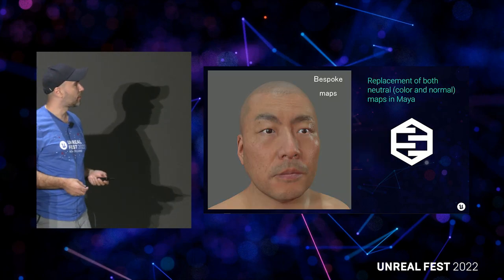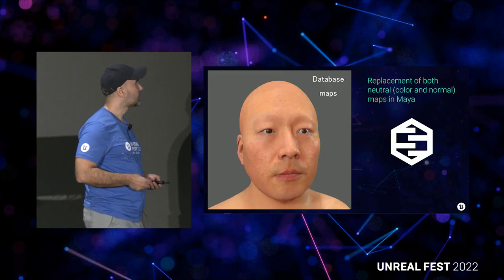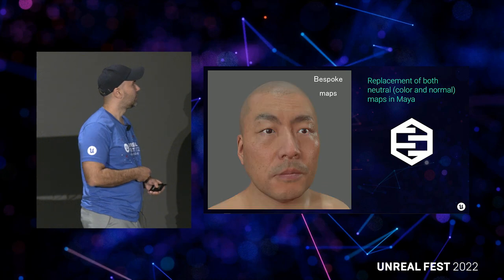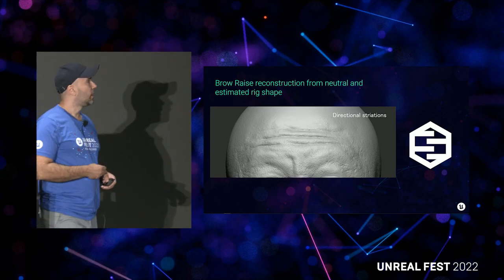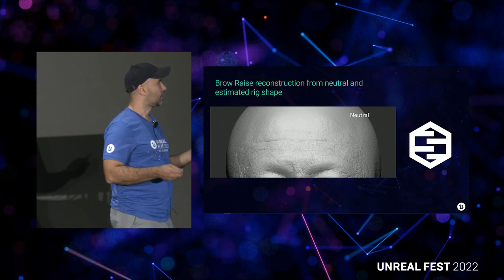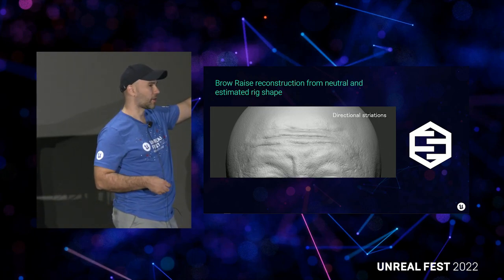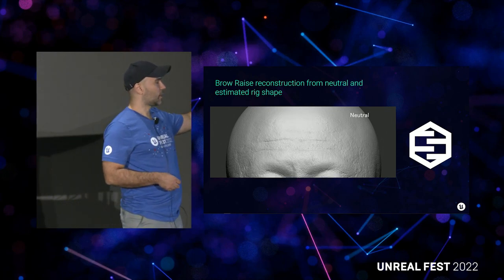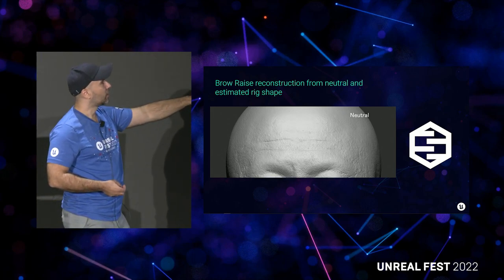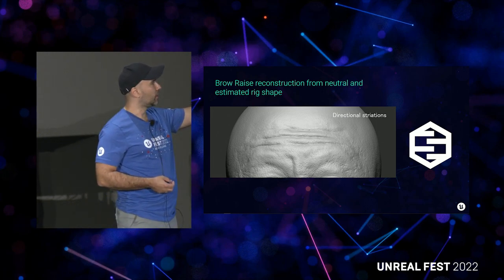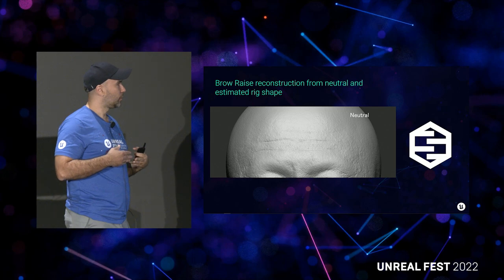When we have both the normal and the color, we can replace those maps, and you can see instantly better likeness to our character. Now it's time to do the expressions. This is done by taking the original sculpt for the neutral and updating it with the shape from the rig that does the brow-raising action — but all the fine information still comes from the neutral. We need to actually enhance that manually, fabricating all the layers you see: the volume, additional forms, and directional striations are all done manually to mimic the real thing. The directional striations mimic the surface tension on the skin in the horizontal direction typical for this expression.